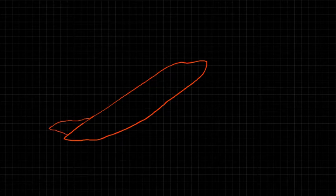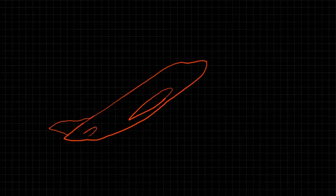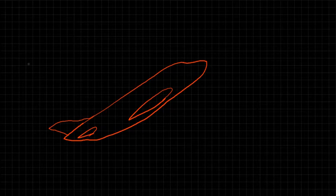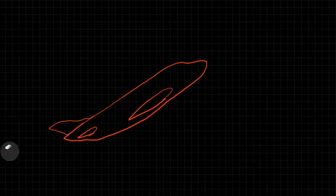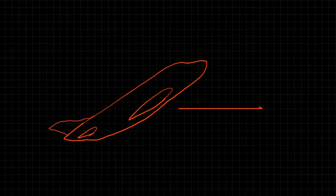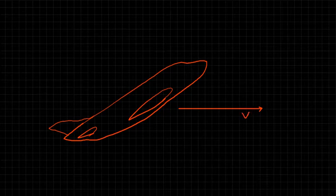Let's talk about the thrust required. Consider an aircraft flying through the air — let's draw a free body diagram. Here we have an aircraft with a wing and tail, flying through the air with velocity V, parallel to the earth. Let's draw a line to represent the velocity vector, and now let's label the forces on this aircraft.